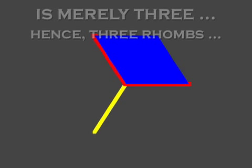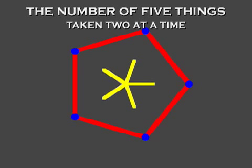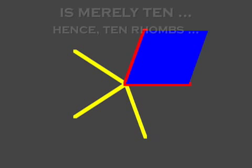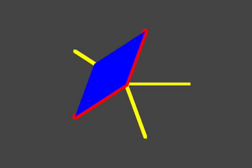When n equals three, there are only three ways to combine the three vectors. But when n equals five, suddenly there are ten ways to combine the n vectors. But of those ten ways, there are really only two different shapes of rhomb that arise.